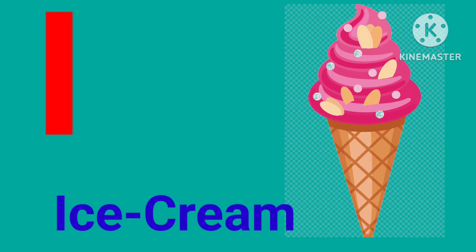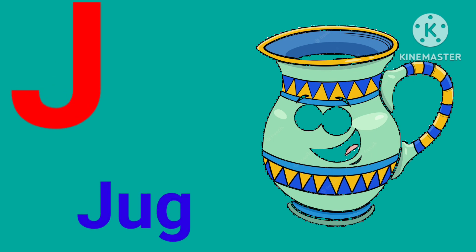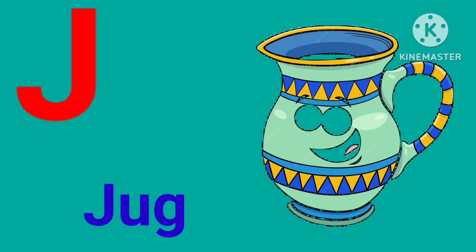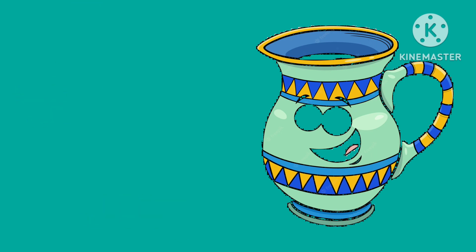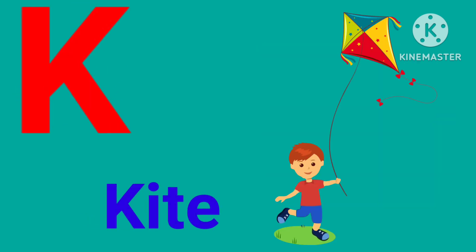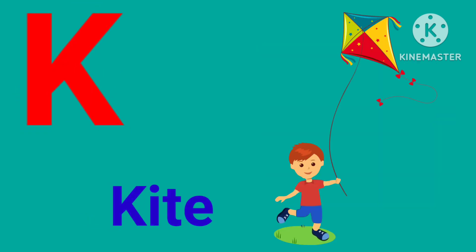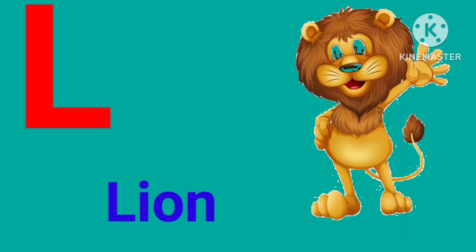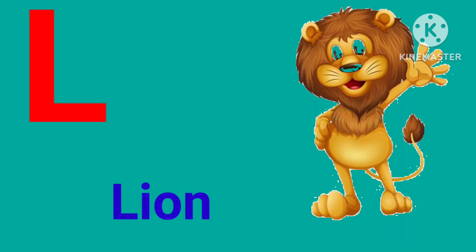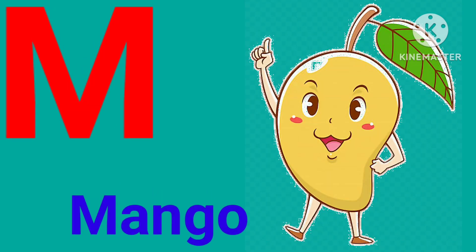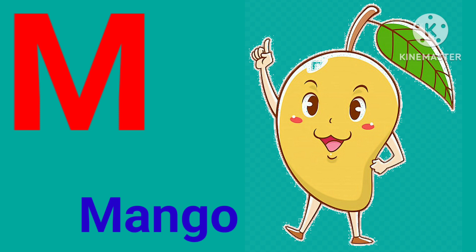I for ice cream, J for jug, K for kite, L for lion, M for mango.